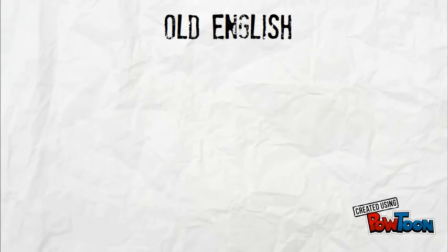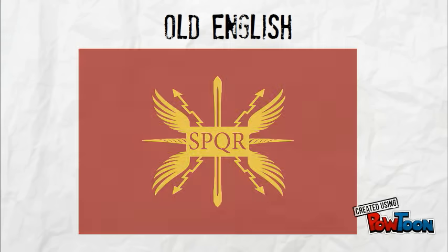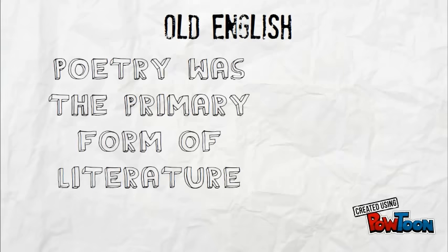There was also Roman colonization which impacted the language spoken, but the primary focus here is the literature during the Old English period. During this time, the primary form of literature was poetry — heroic poetry to be more specific, or what we call an epic.